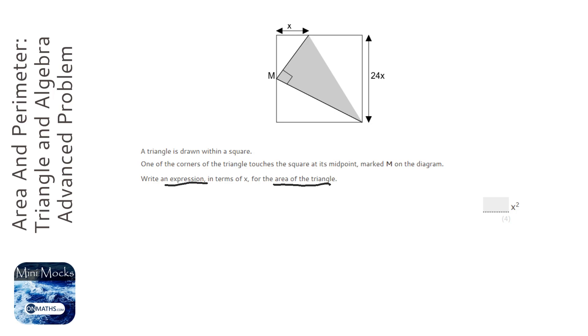The most important thing to realize at the start is that M is the midpoint, and we need to start labeling the sides. So if the total height is 24x, then this bit here will be 12x, and this bit here will be 12x, because M is a midpoint.